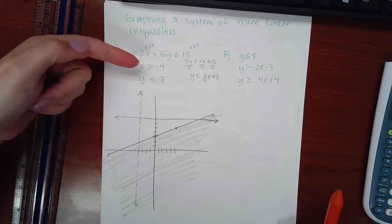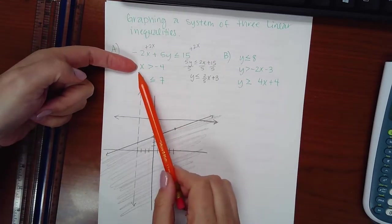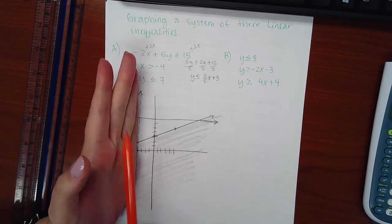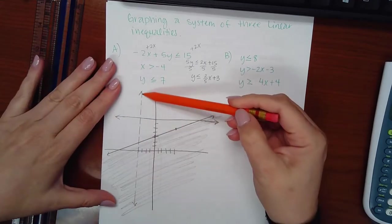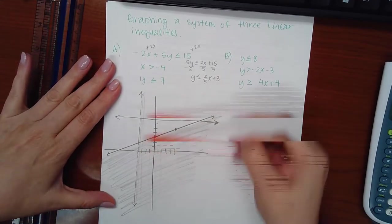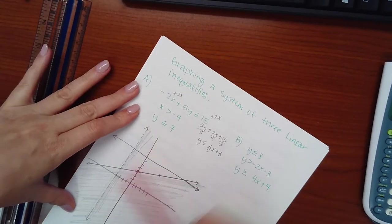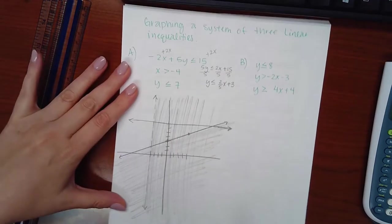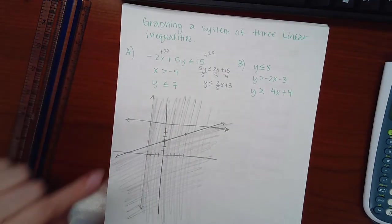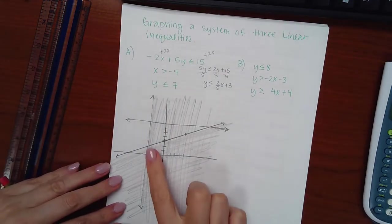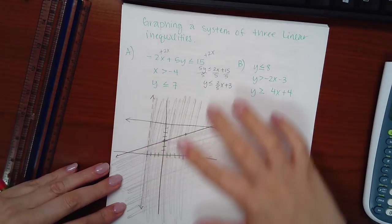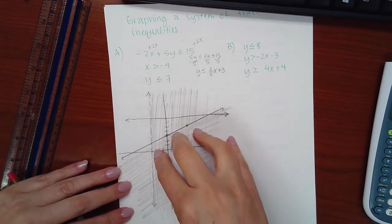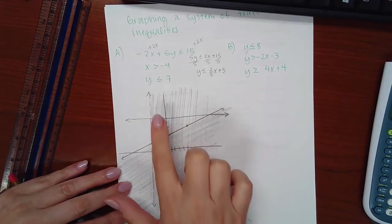Now, the second equation says x should be greater than negative 4. So here's the line, and greater would be to the right. So that means I would shade this region, everything, all the x values bigger than negative 4. So far, the two regions that overlap, you've got this one going this way and you've got this one going this way. So right in here is where those two regions overlap. But we still need to graph the last one.